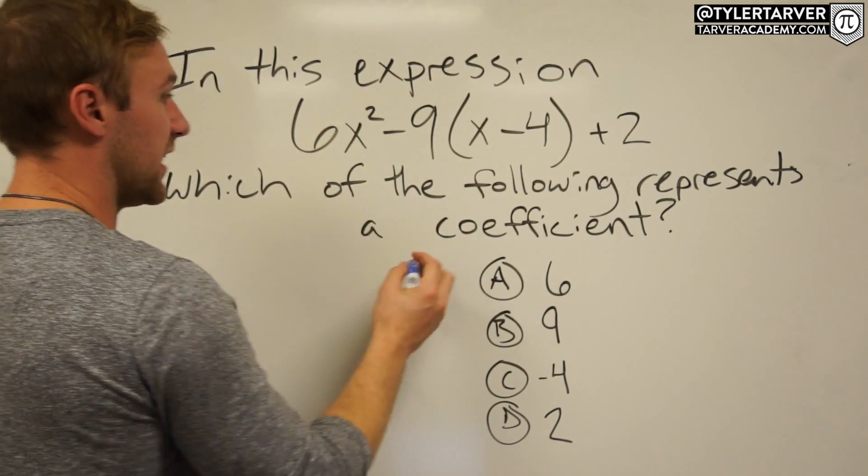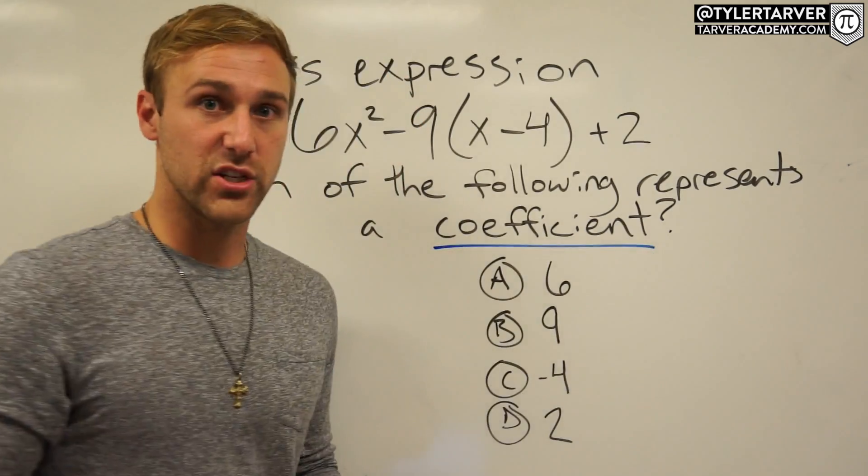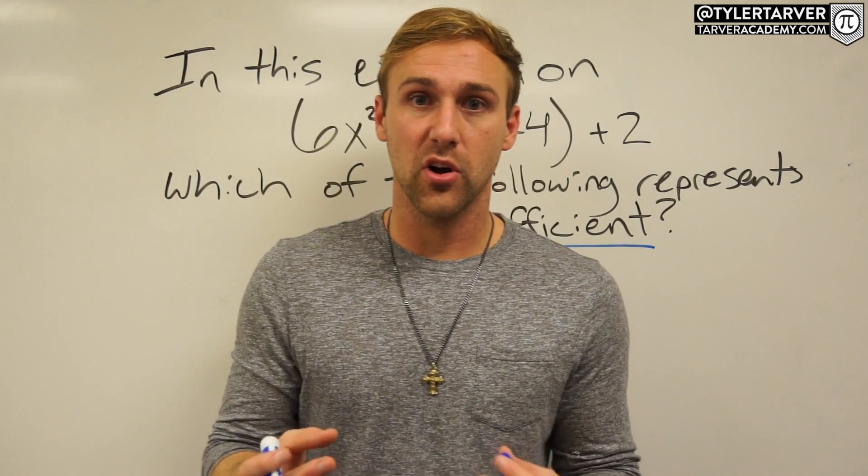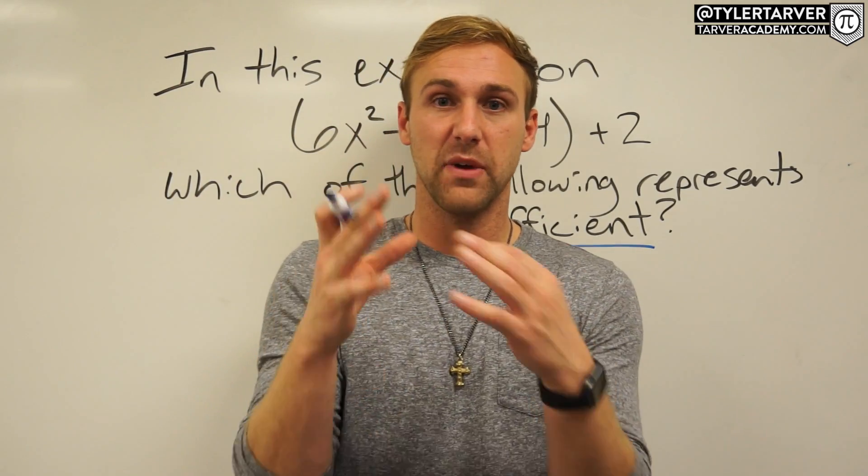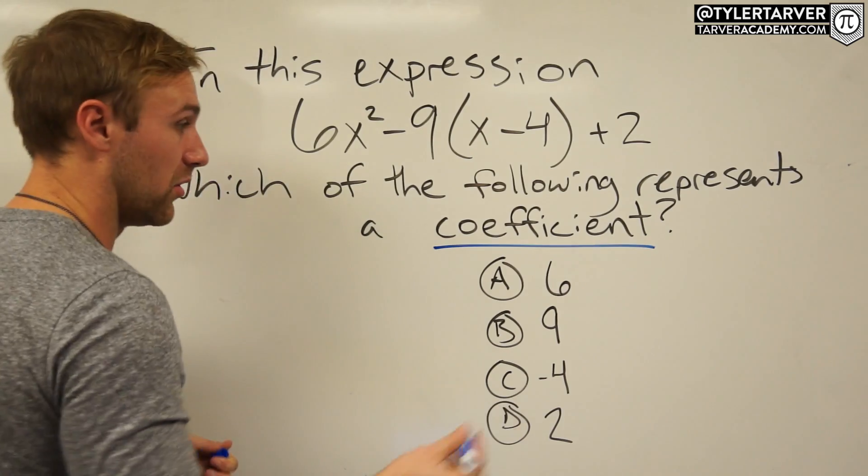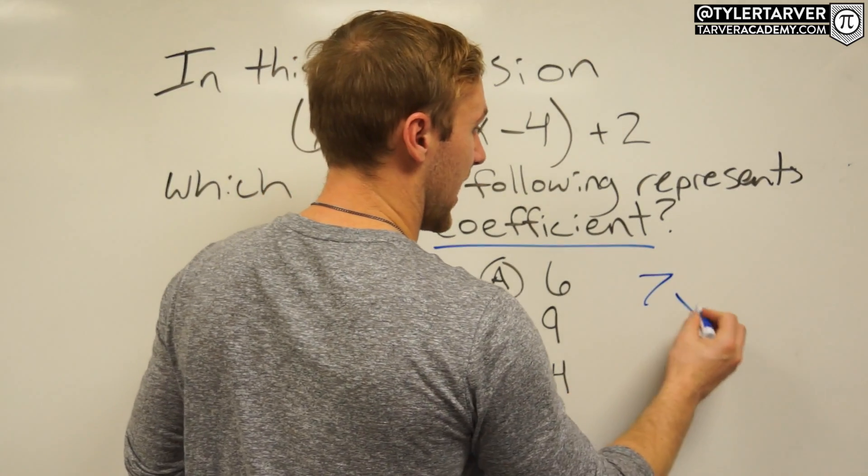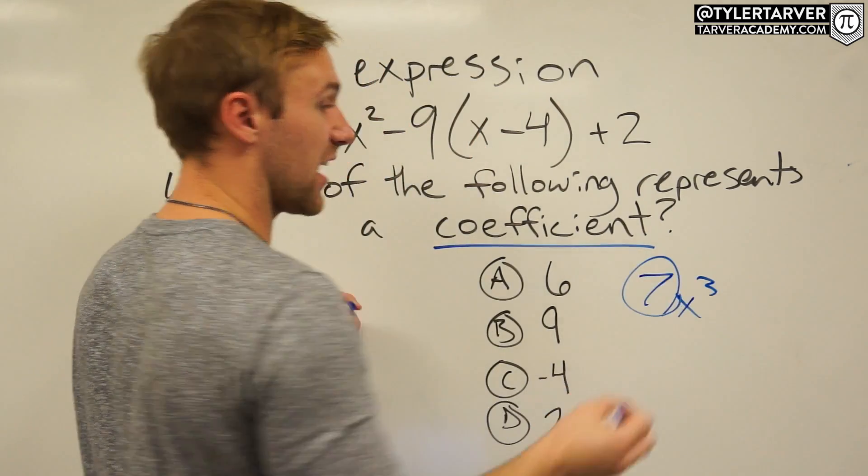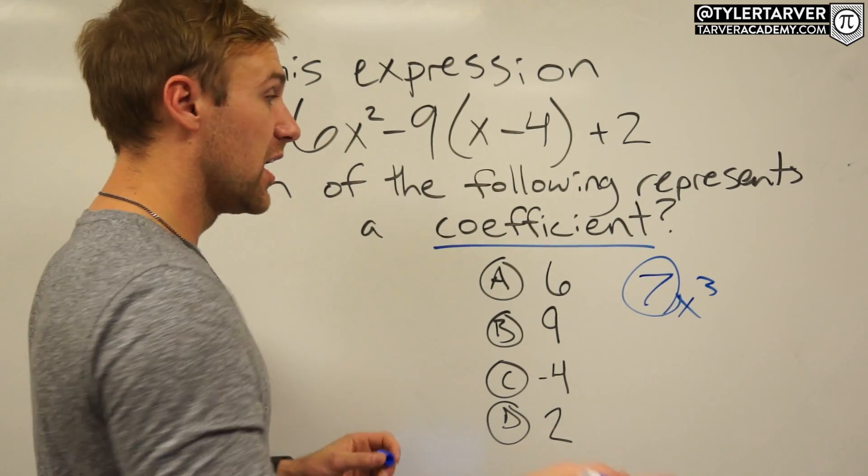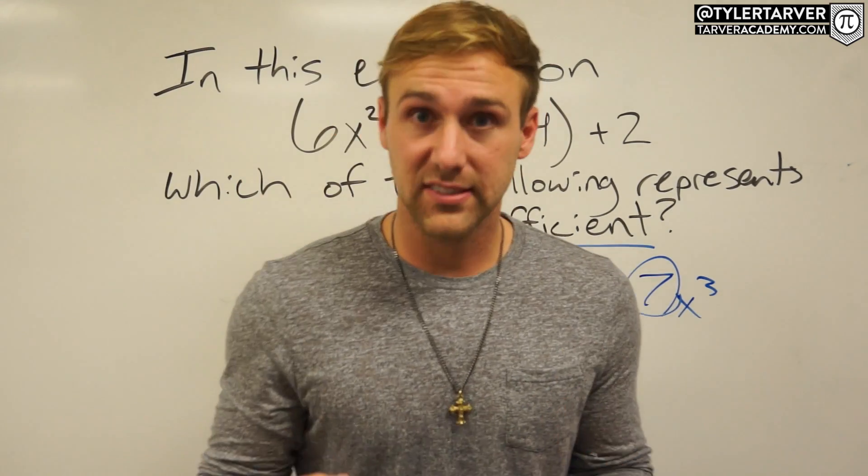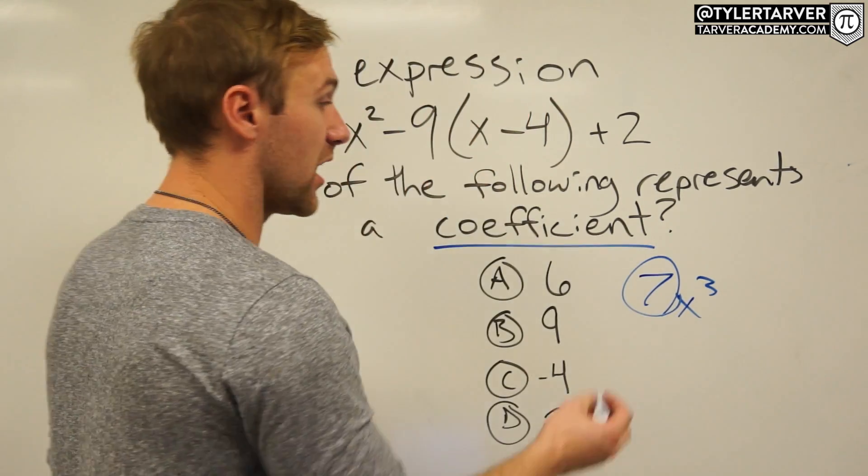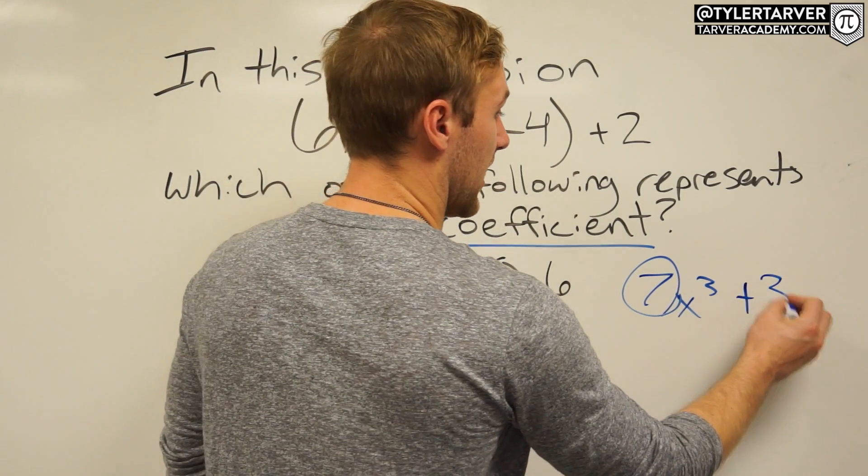First thing we need to know is what is a coefficient? A coefficient is a number that is in front of a variable, it's being multiplied by a variable. So for instance, 7x to the third, seven is a coefficient.